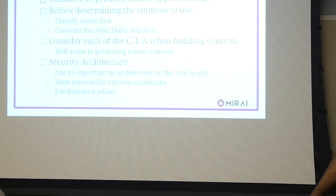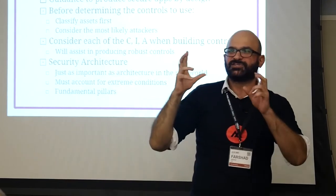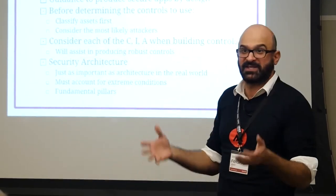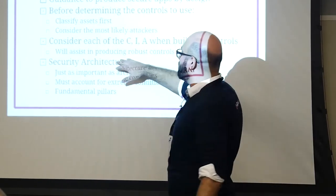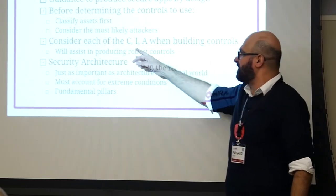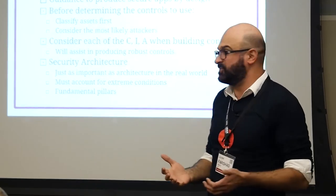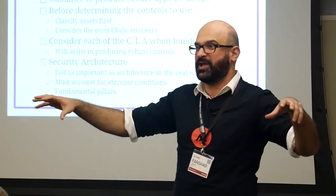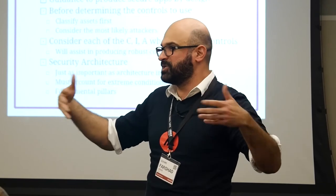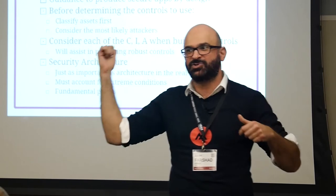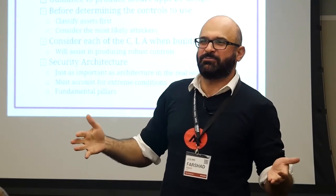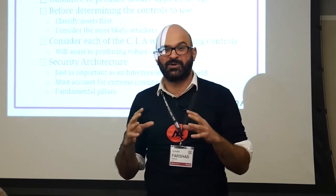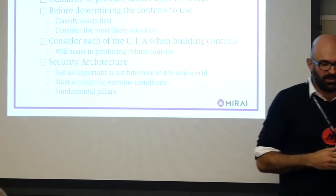Before determining controls, you classify assets first and consider the most likely attackers — that's pseudo threat modeling done early. You model the assets, the threat actors, and threat scenarios, then build controls to prevent them. As you go through that process, consider the C, I, and A — Confidentiality, Integrity, and Availability — when building those controls. This produces more robust controls. Just like a bridge not designed for heavy wind will fail when wind eventually comes, if you haven't thought about potential attacks and built controls, you're not ready. Patchwork like adding a WAF afterward isn't the real solution.